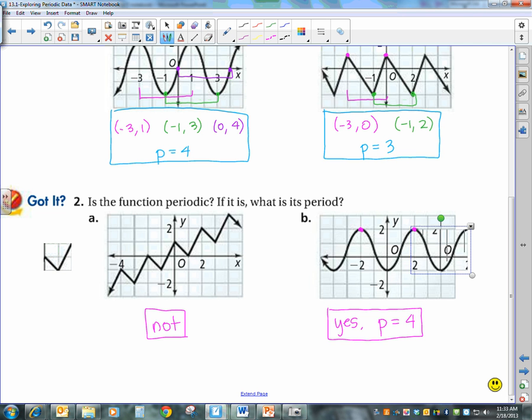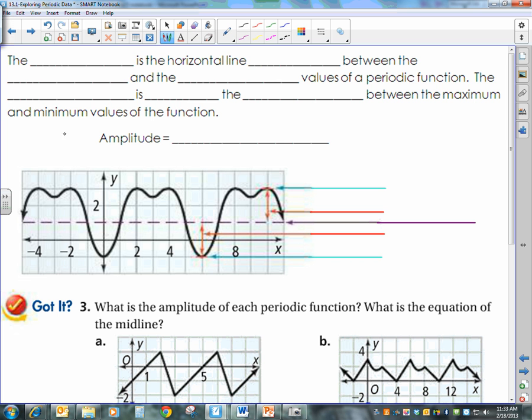Next, we need to talk about the midline. The midline of a periodic function is the horizontal line midway between the maximum and the minimum values of a periodic function. We have a midline. And then we also have to talk about the amplitude.